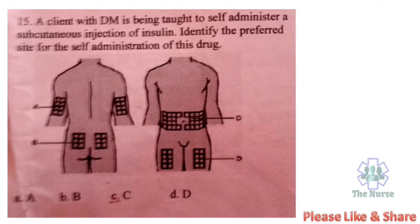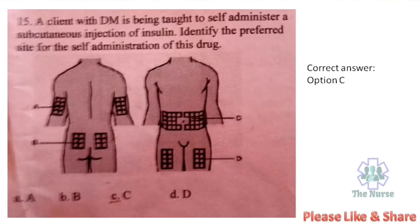Next question: A client with diabetes mellitus is being taught to self-administer subcutaneous injections of insulin. Identify the preferred site for self-administration of this drug. Correct answer: Option D — around the umbilicus. The area around the umbilicus is the preferred self-administration site for insulin.